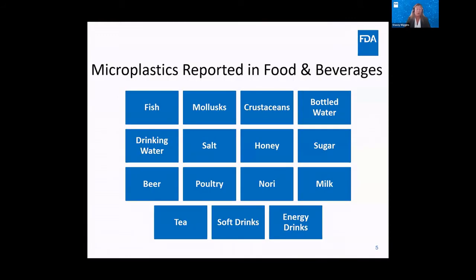Microplastics have been reported in the scientific literature for a range of food and beverages. These include fish, mollusks, crustaceans, bottled water, drinking water, salt, honey, sugar, beer, poultry, nori, milk, tea, soft drinks, and energy drinks.